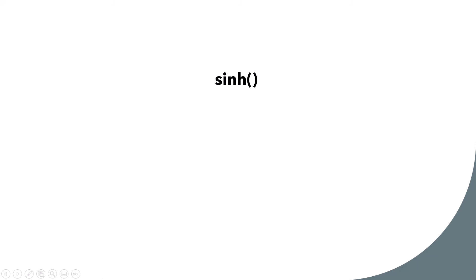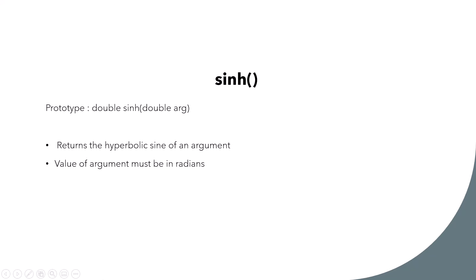Coming to sinh: from the prototype, this returns a double and takes a double as argument. It returns the hyperbolic sine of the argument, which must be in radians. When plotted on a graph it has a characteristic S-like curve, related to the hyperbola shape.